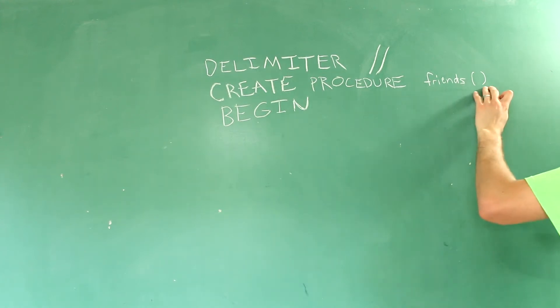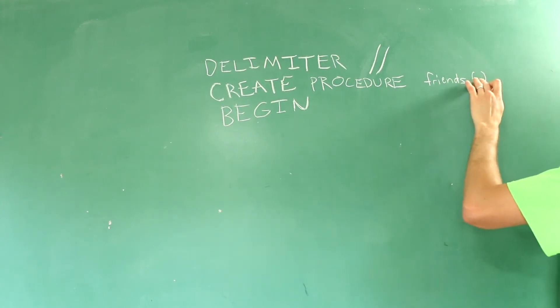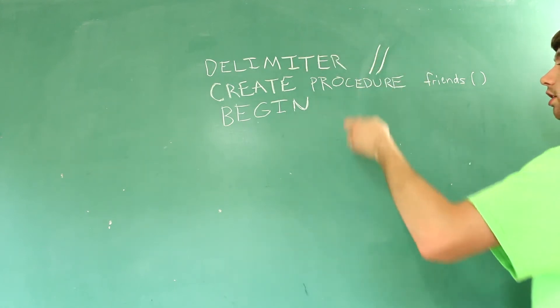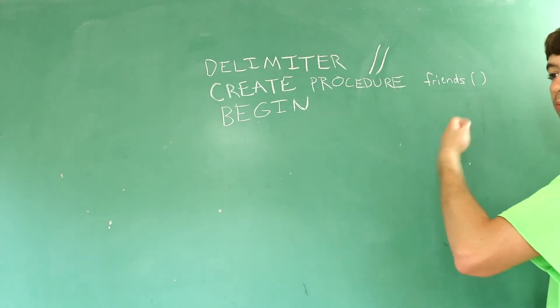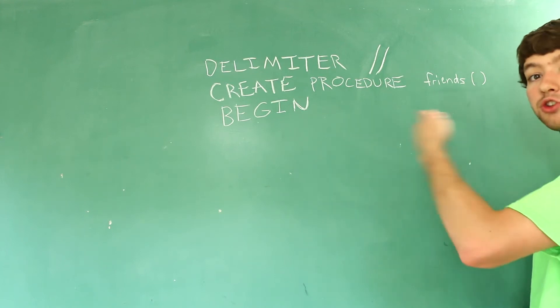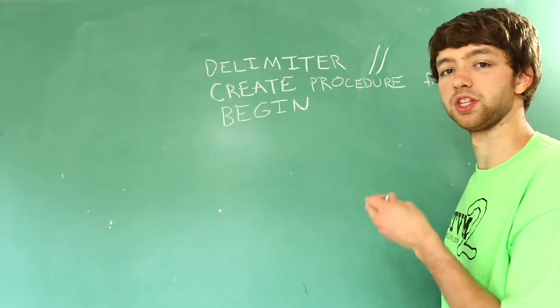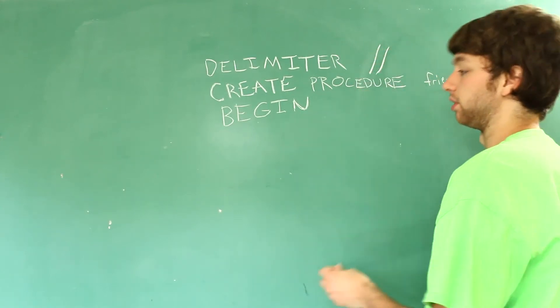We have a stored procedure with the name friends and it takes no parameters. And we can use the semicolon within the definition because we use this delimiter here. That way the semicolon can be passed to the server rather than being interpreted by MySQL. The next part is what I mentioned in the last video which is the end keyword followed by your new delimiter.